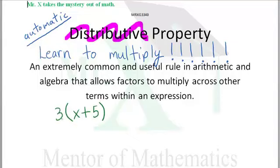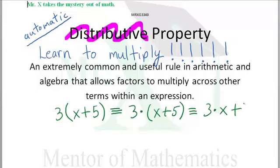Quick example. You see 3, parentheses, x plus 5, close parentheses. That is exactly the same as 3 times x plus 5. And what that is equivalent to is 3 times the x plus 3 times the 5.